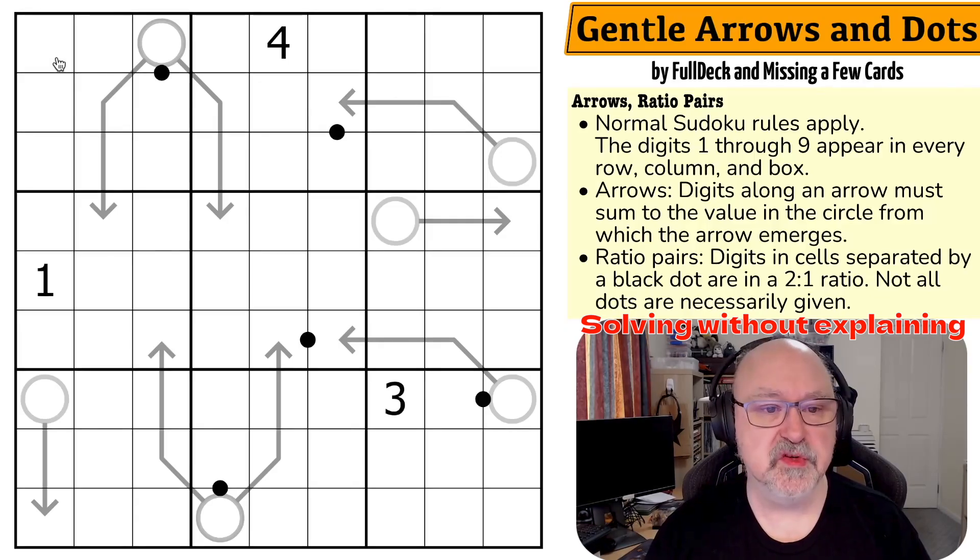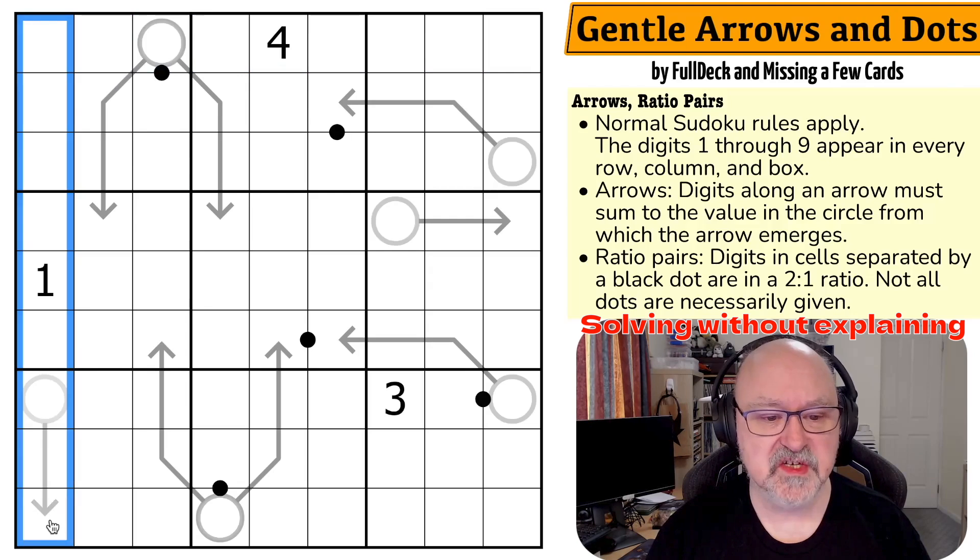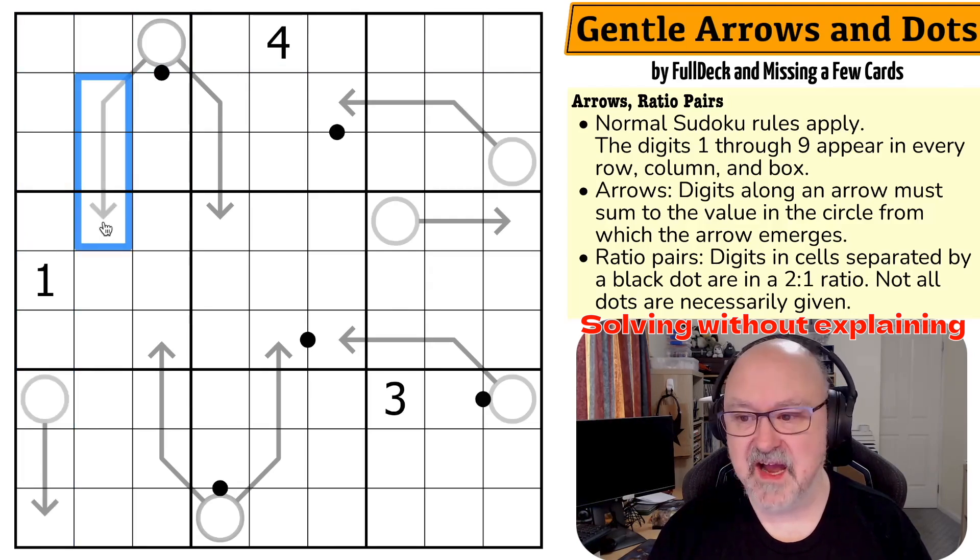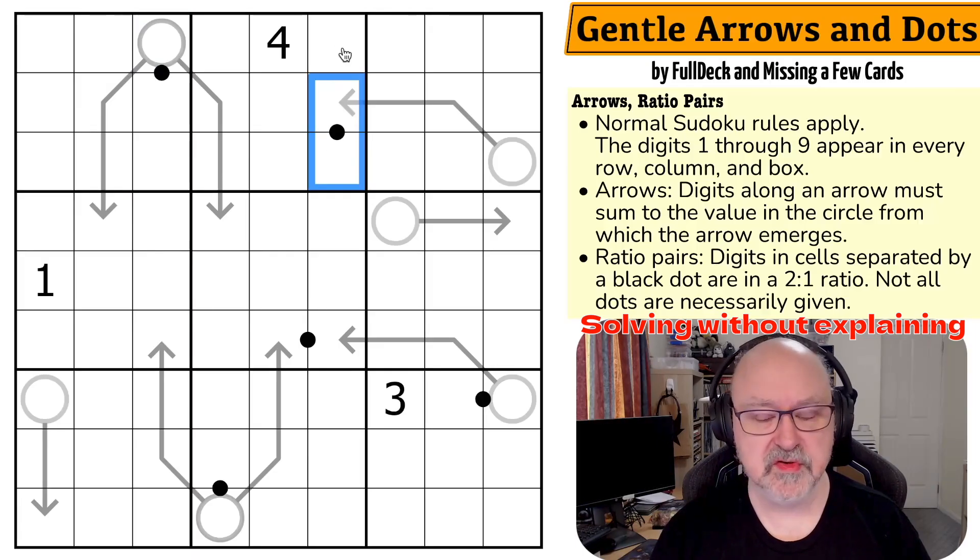I'll go through the rules, which is normal Sudoku rules, so in every box, in every row, and in every column, the digits one to nine must be placed without repetition. Along these arrows, the digits on an arrow must sum to the digit placed in the arrow circle. We've got ratio pairs, which is digits on one of these black dots must be in a ratio of two to one. Not all dots are necessarily given.